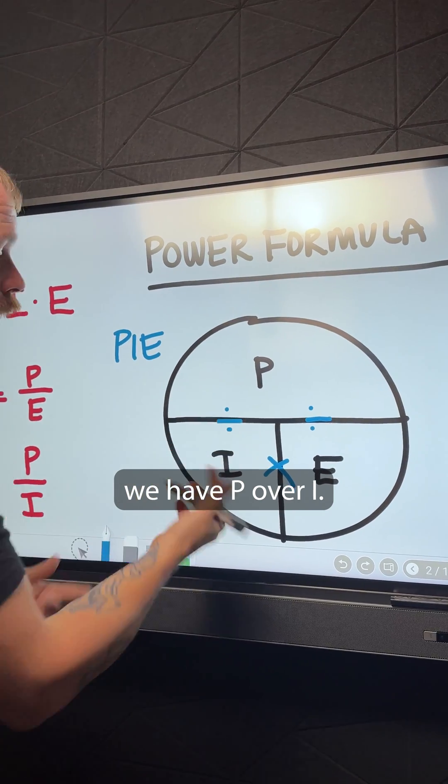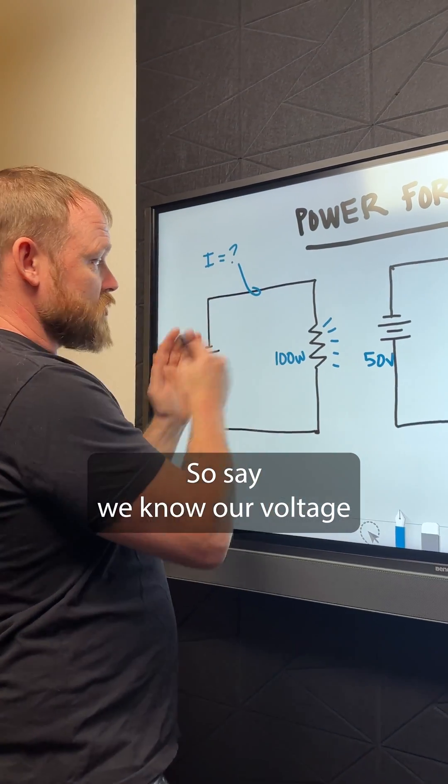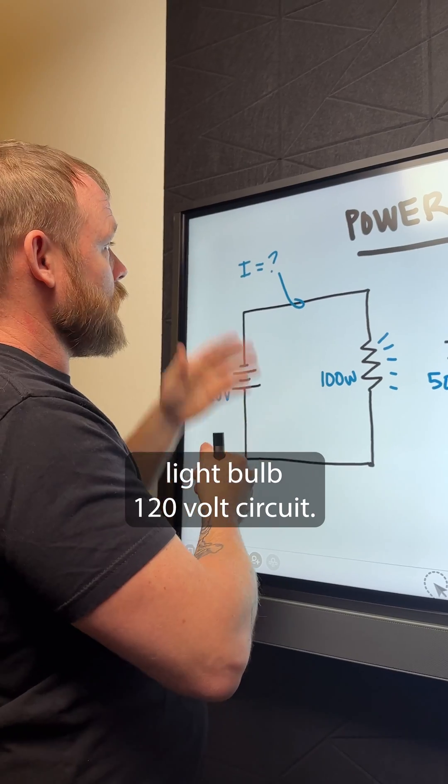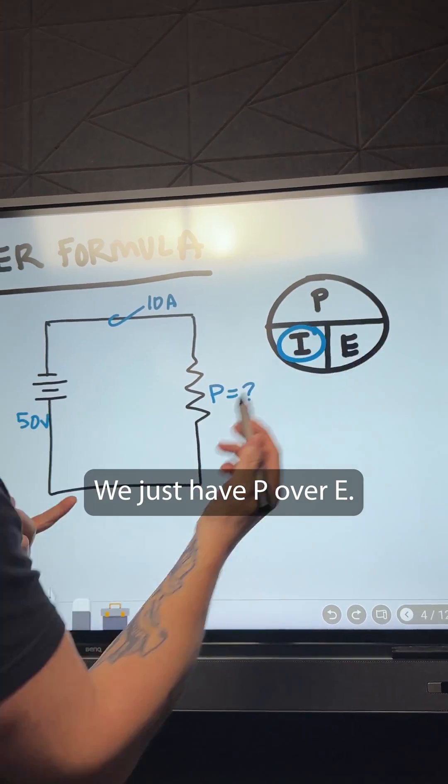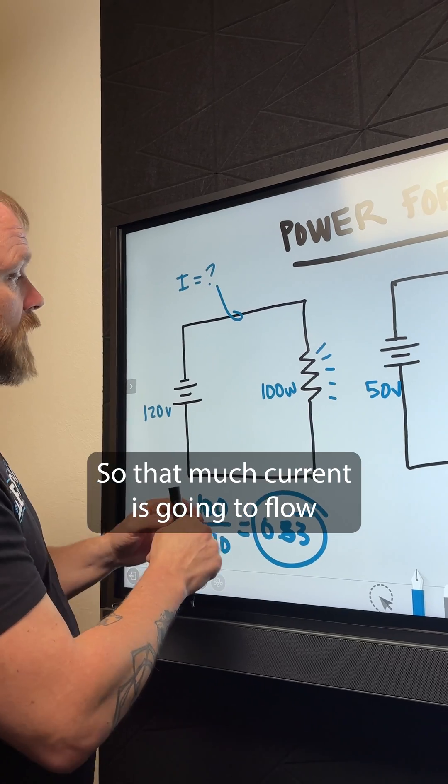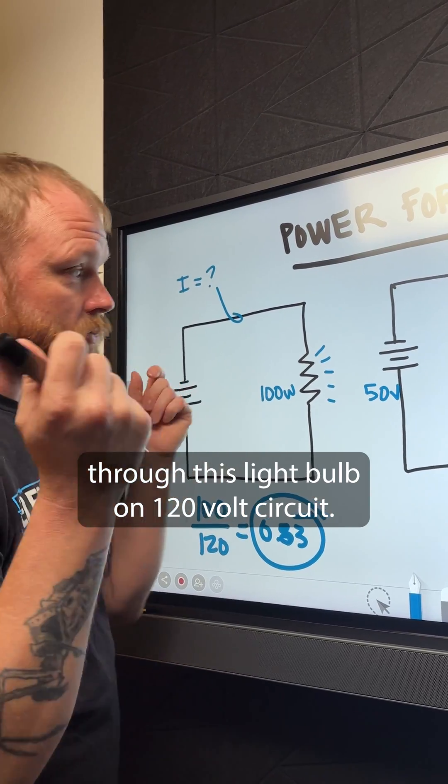So say we know our voltage and we know we have a 100 watt light bulb, 120 volt circuit. What is our current? Well, we look over here. If we're solving for current, we just have P over E. So that much current is going to flow through this light bulb on a 120 volt circuit.